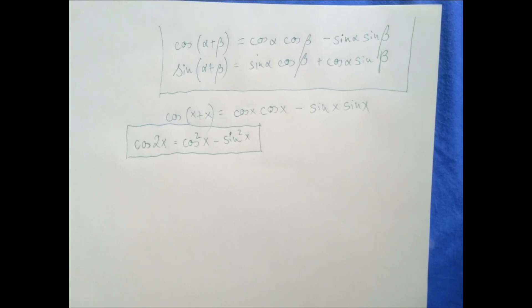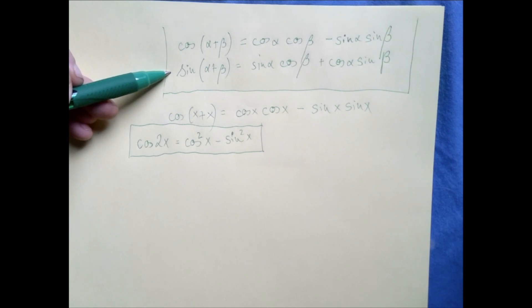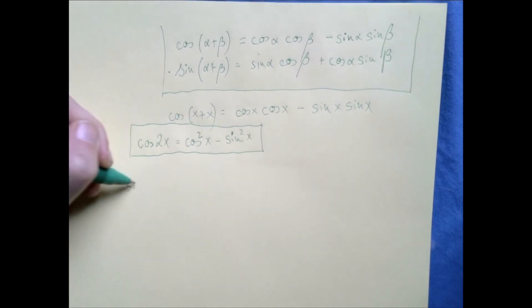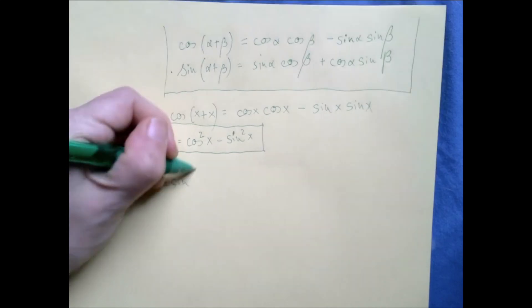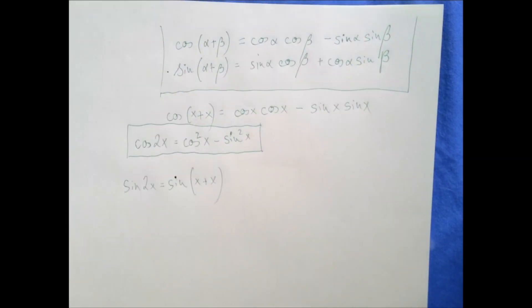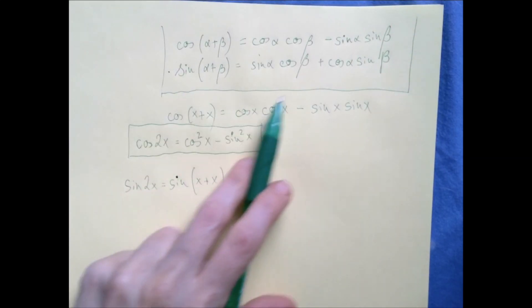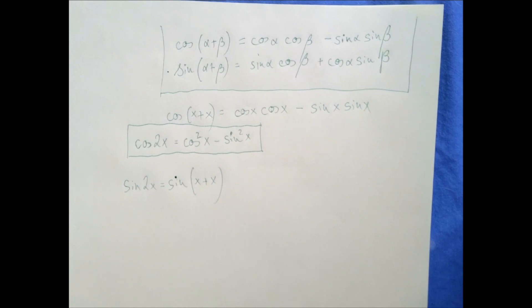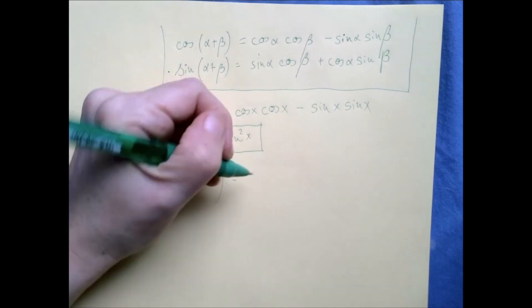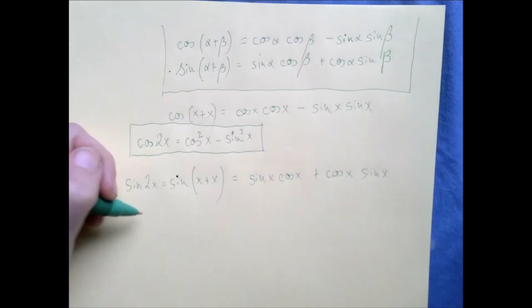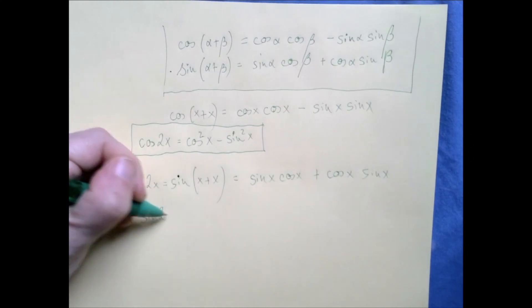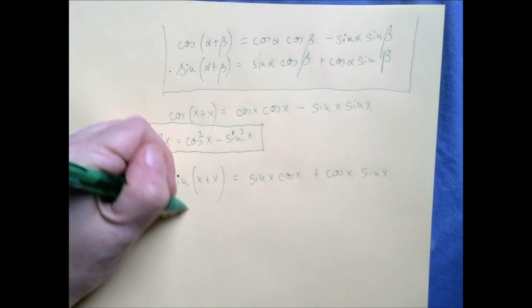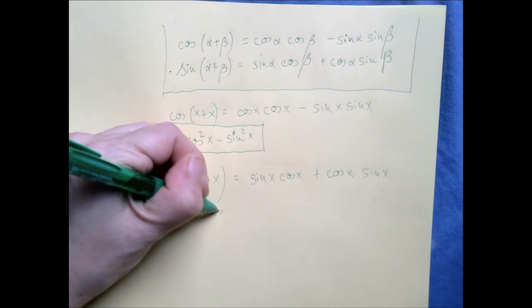Similarly, the double angle formula for sine would be just a weakening of the sum formula. Sine of 2x is just sine of x plus x, and we're going to continue writing x wherever we see alpha or beta. Instead of sine alpha cosine beta plus cosine alpha sine beta, we write sine x cosine x plus cosine x sine x. So the double angle formula for sine is 2 times sine x cosine x.